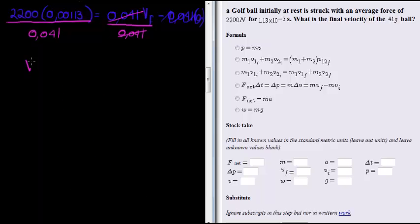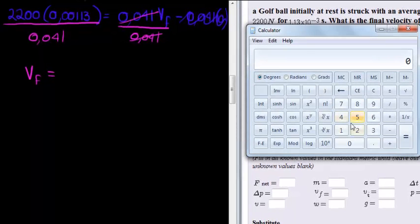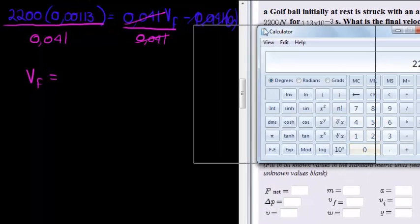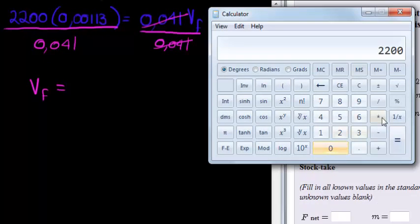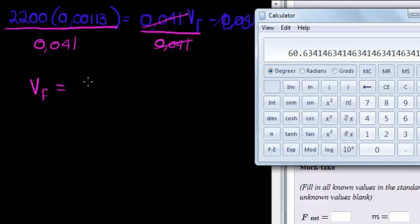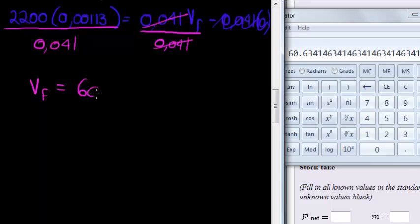What is my final answer? Future velocity is equal to, and now I'm going to have to use my calculator. So I get 2200 times 0.00113 divided by 0.041 gives me 60.63 meters per second. That's my final velocity.